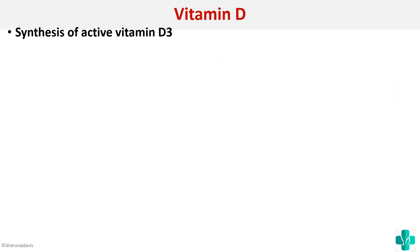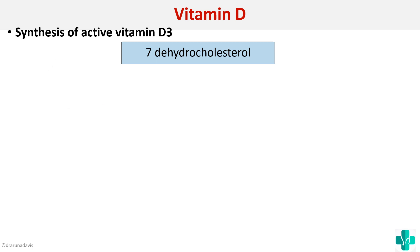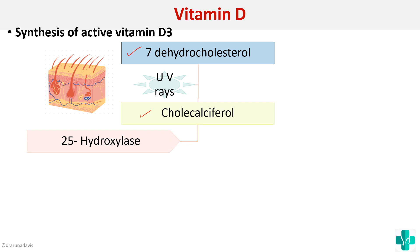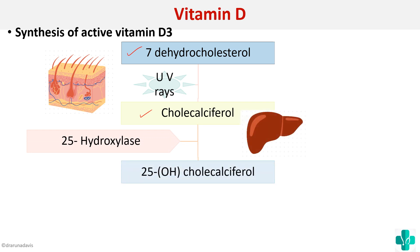Next we'll see the role of vitamin D, but first we need to know about its synthesis. The 7-dehydrocholesterol present in the keratinocytes of the skin is activated in the presence of UV rays from the sun to form cholecalciferol. This cholecalciferol is then converted to 25-hydroxycholecalciferol in the liver by the enzyme 25-hydroxylase.